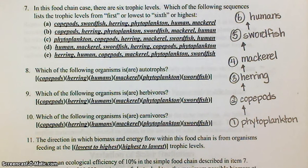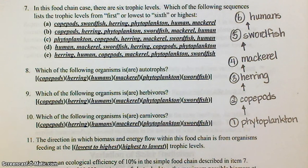Number eight: which of the following organisms are autotrophs? Remember that autotrophs make their own food. Autotrophs in a terrestrial ecosystem are plants. Autotrophs in a marine ecosystem are phytoplankton. So the autotrophs here — you should select phytoplankton.